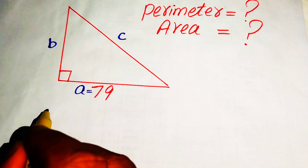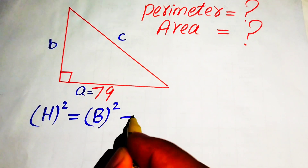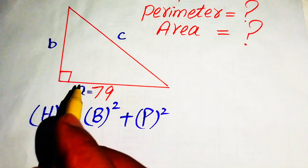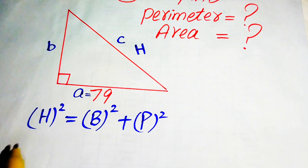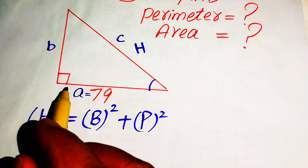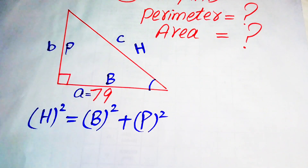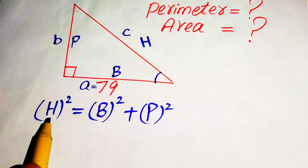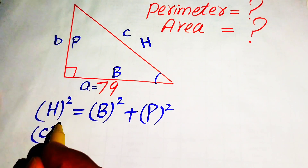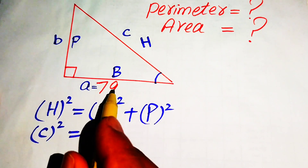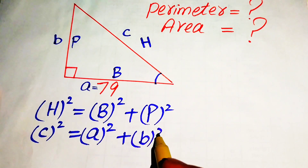In the Pythagorean theorem, hypotenuse squared equals base squared plus perpendicular squared. In a right triangle, the side opposite to the right angle is known as the hypotenuse. So c is our hypotenuse, a is the base, and b is the perpendicular. Substituting, we get c² = a² + b².